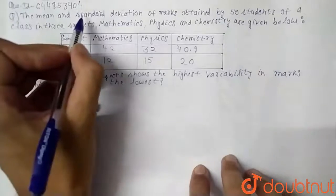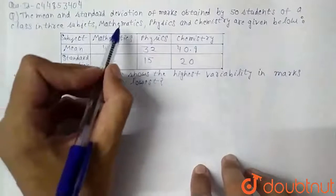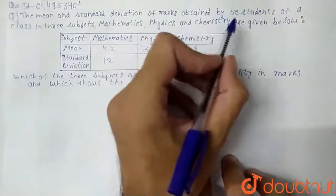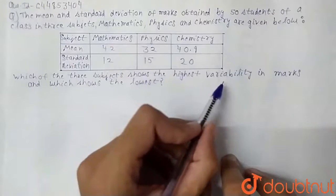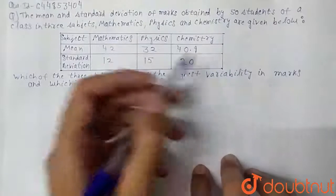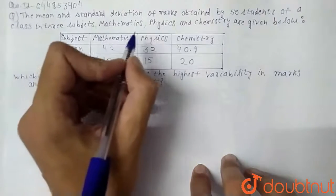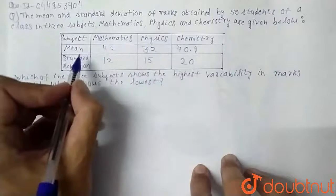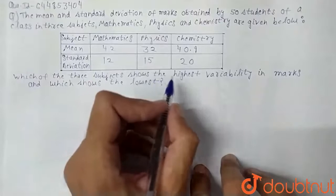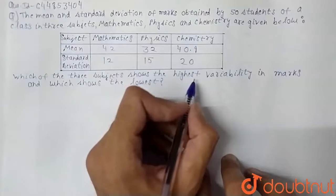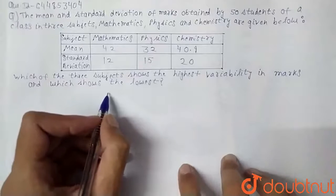The mean and standard deviation of marks obtained by 50 students of a class in three subjects — mathematics, physics, and chemistry — are given below. Which of the three subjects shows the highest variability in marks, and which shows the lowest? So basically, they give the mean and standard deviation of these three subjects, and we have to find which subject has the highest and lowest variance.